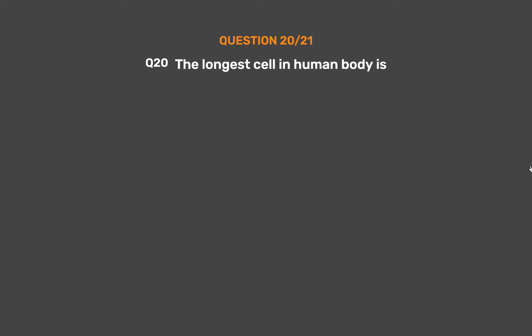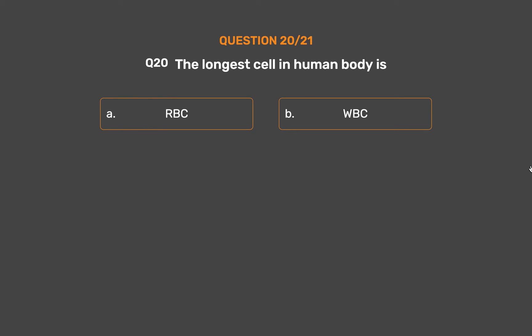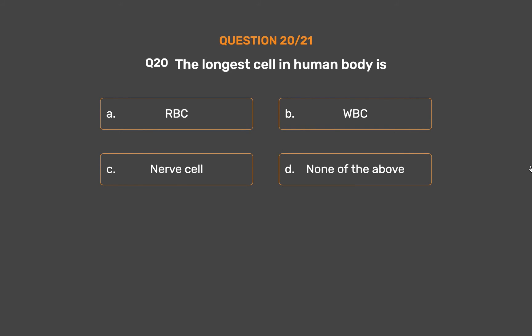Question No. 20: The longest cell in the human body is. Option A: RBC. Option B: WBC. Option C: Nerve cell. Option D: None of the above.